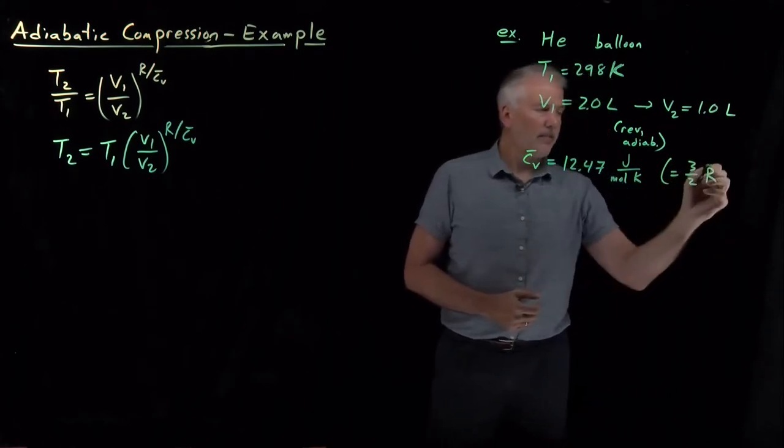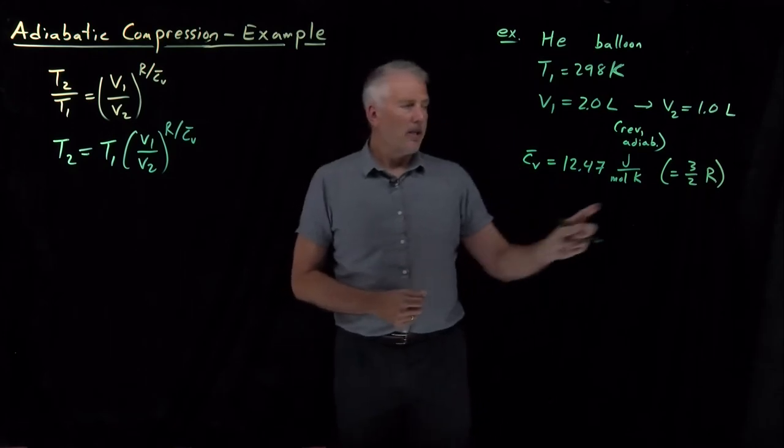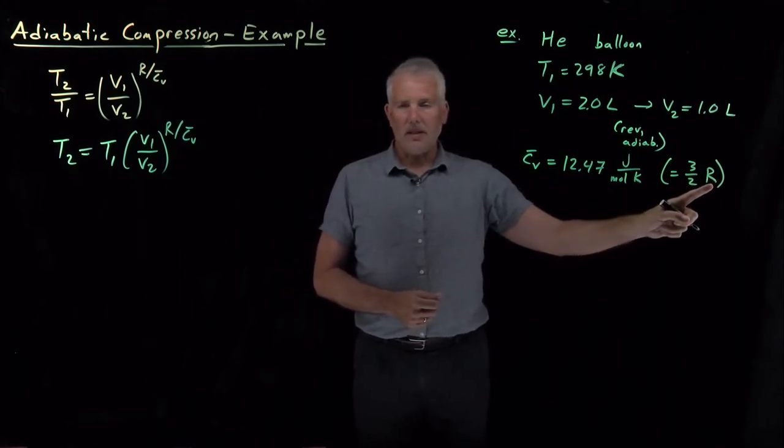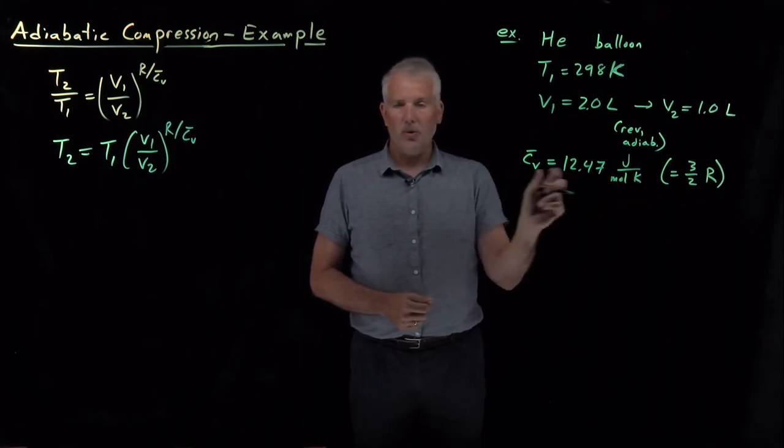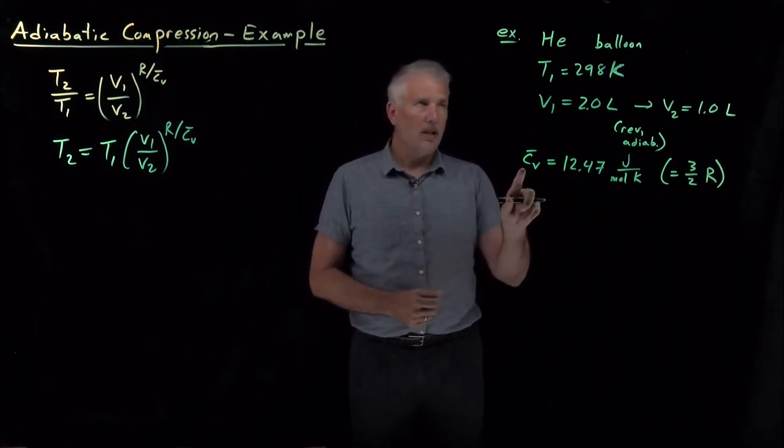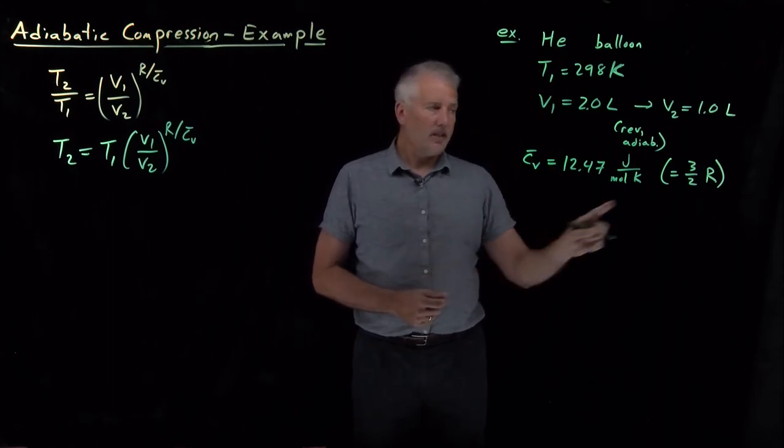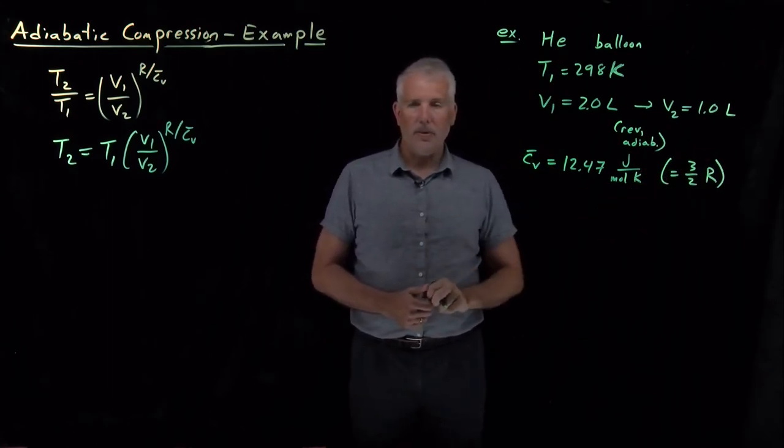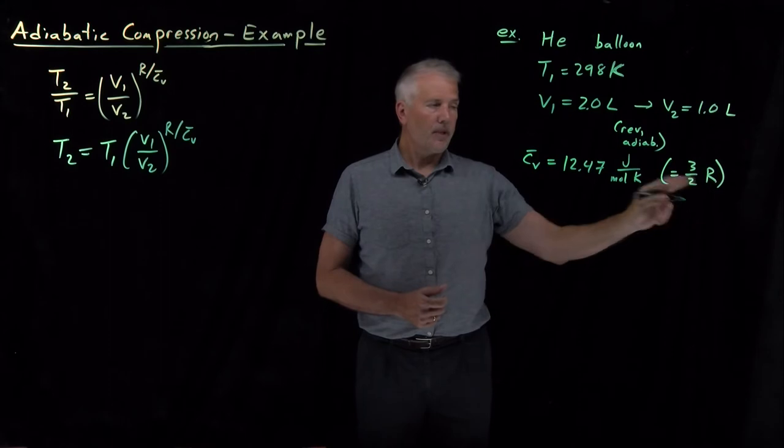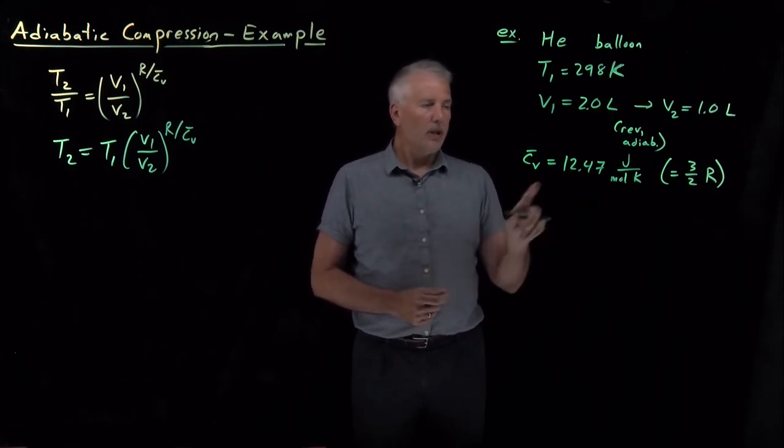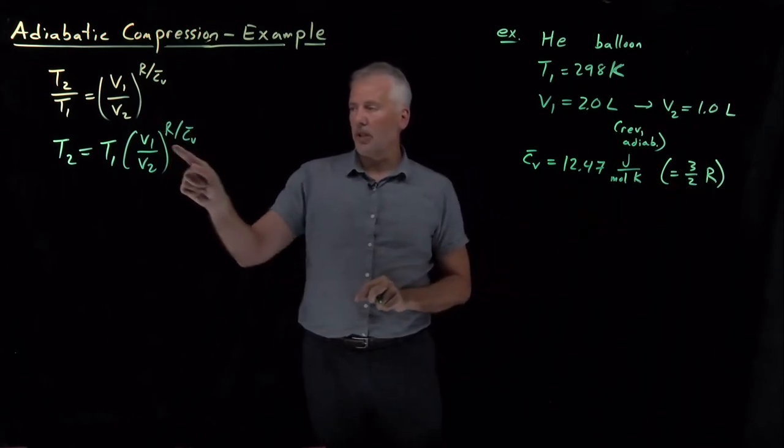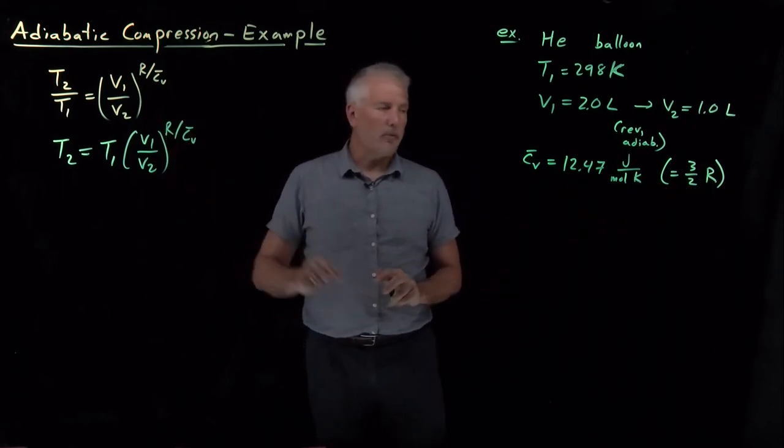Because that's pretty much exactly three-halves the gas constant. Gas constant of 8.314 joules per mole Kelvin. If I multiply that by one and a half, I get 12.47. So the heat capacity of this gas is exactly what's predicted by the 3D particle-in-a-box model. It's three-halves R for the heat capacity, the molar heat capacity. But we need either this information or this information to plug in here to solve the problem.